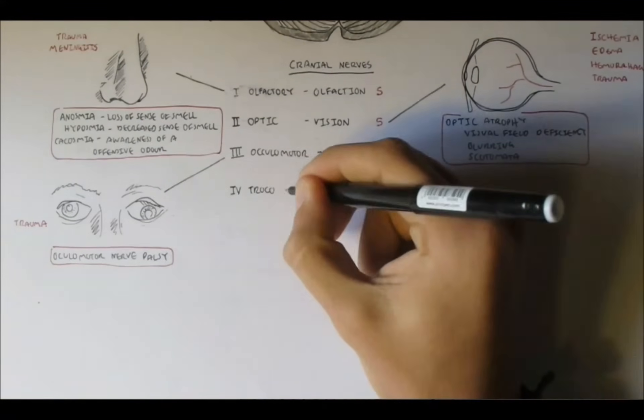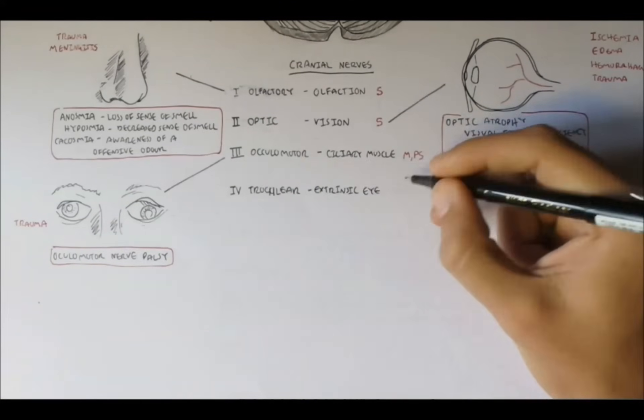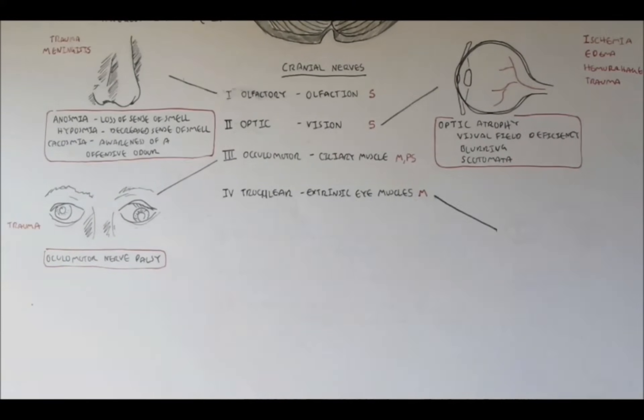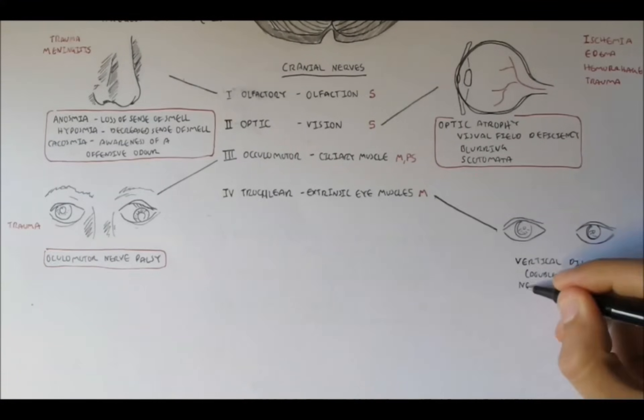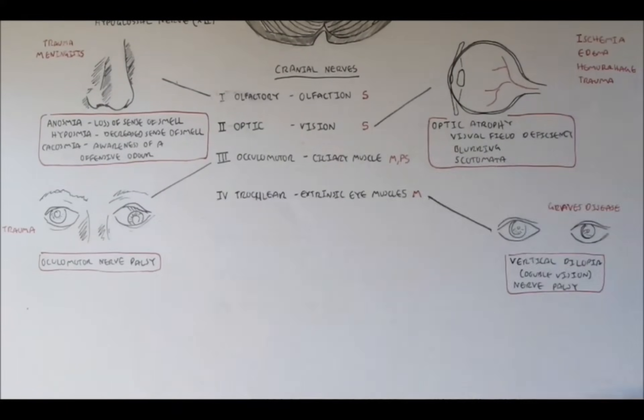Nerve 4 is the trochlear nerve, which controls extrinsic eye muscles. So it is a motor nerve. Damage to this nerve can cause problems with the eyes, and also similar condition with damage to nerve 3, known as vertical diplopia, basically double vision. And also nerve palsy, which is a broad term which implies weakness or immobility of the normal function of that particular nerve. Causes to damage the trochlear nerve can be from Graves' disease.